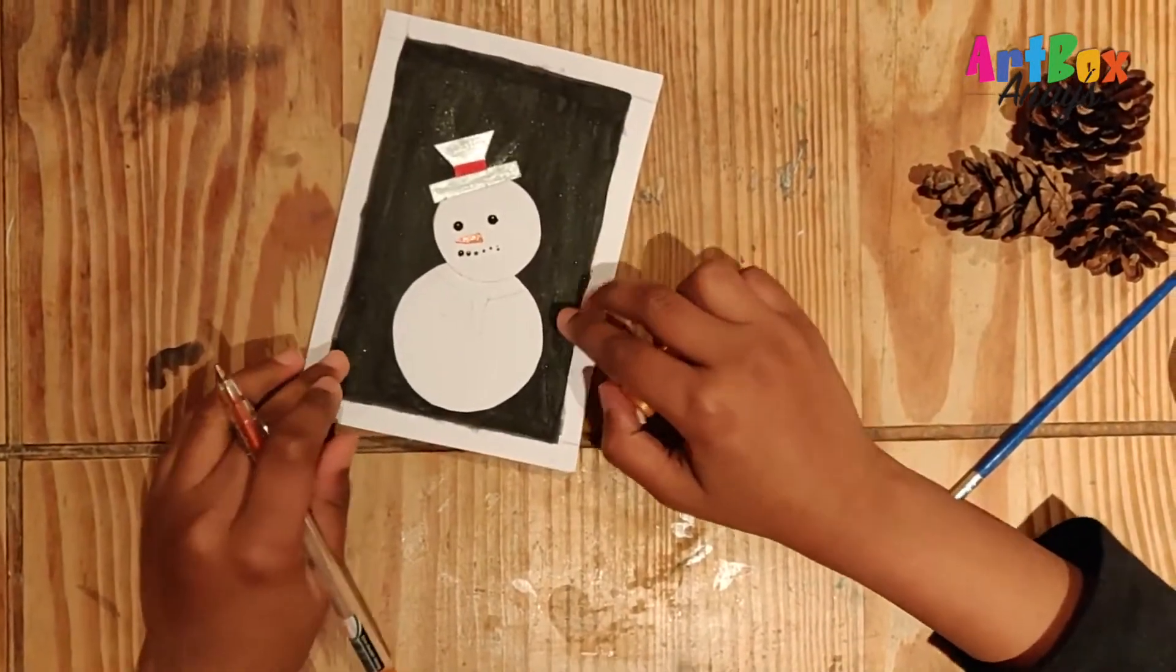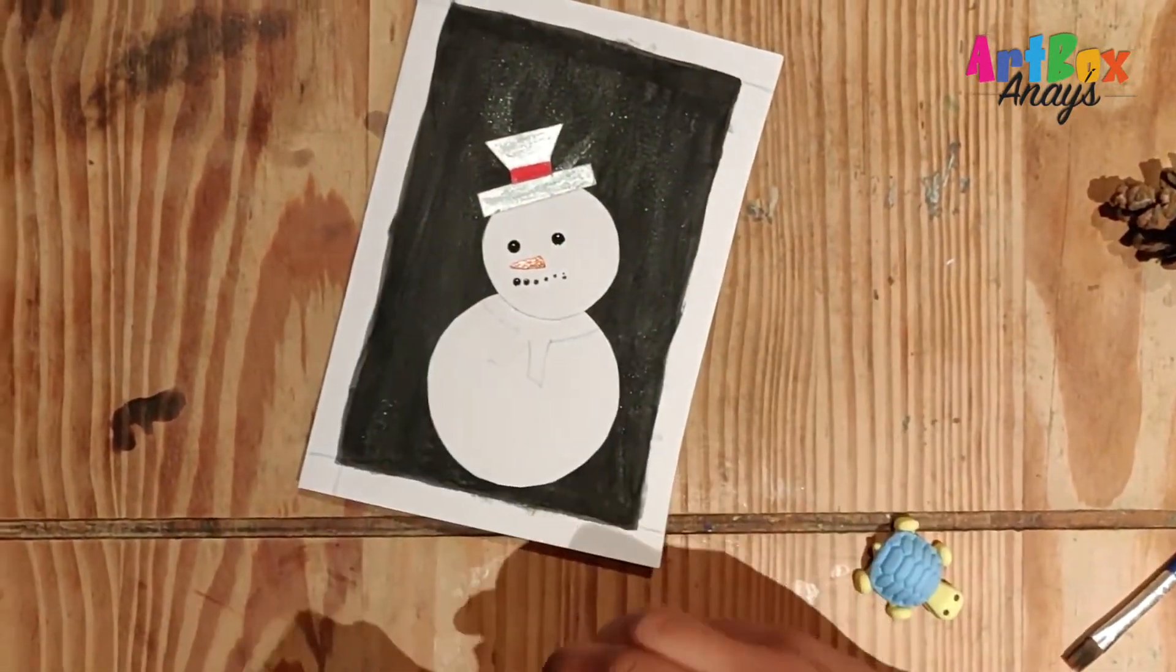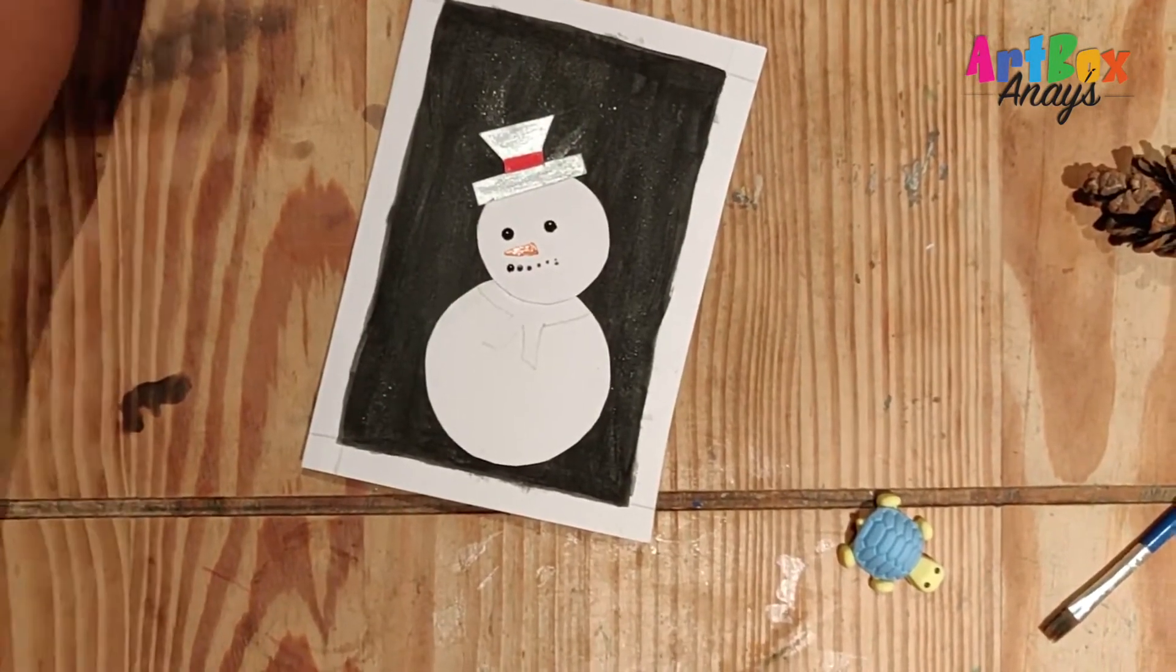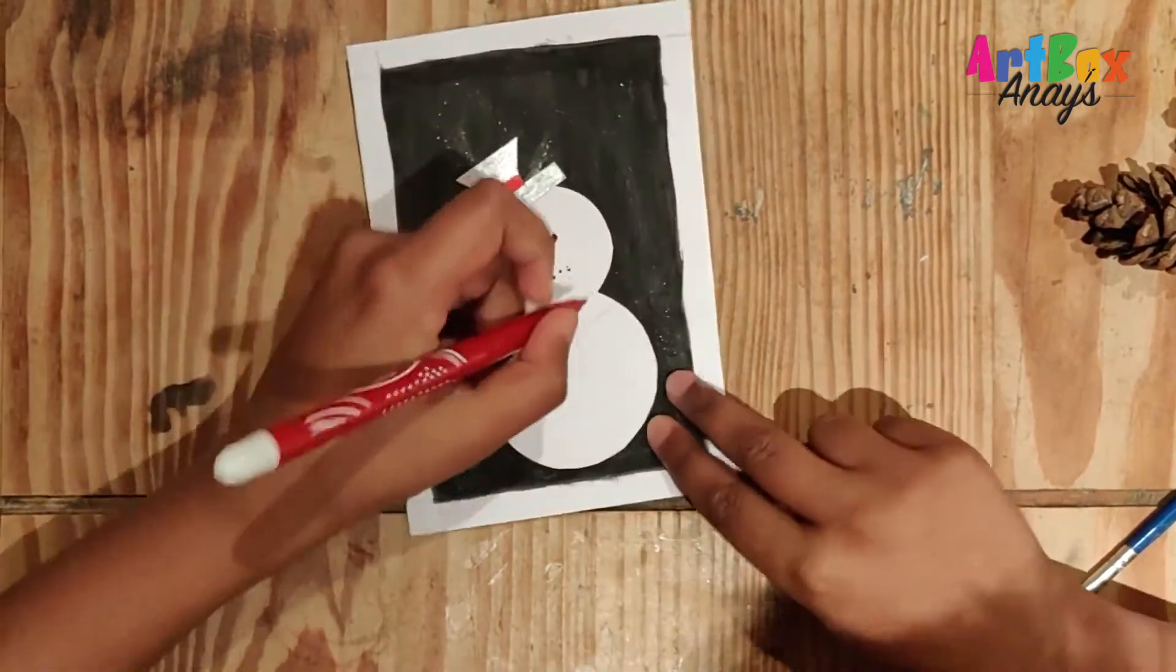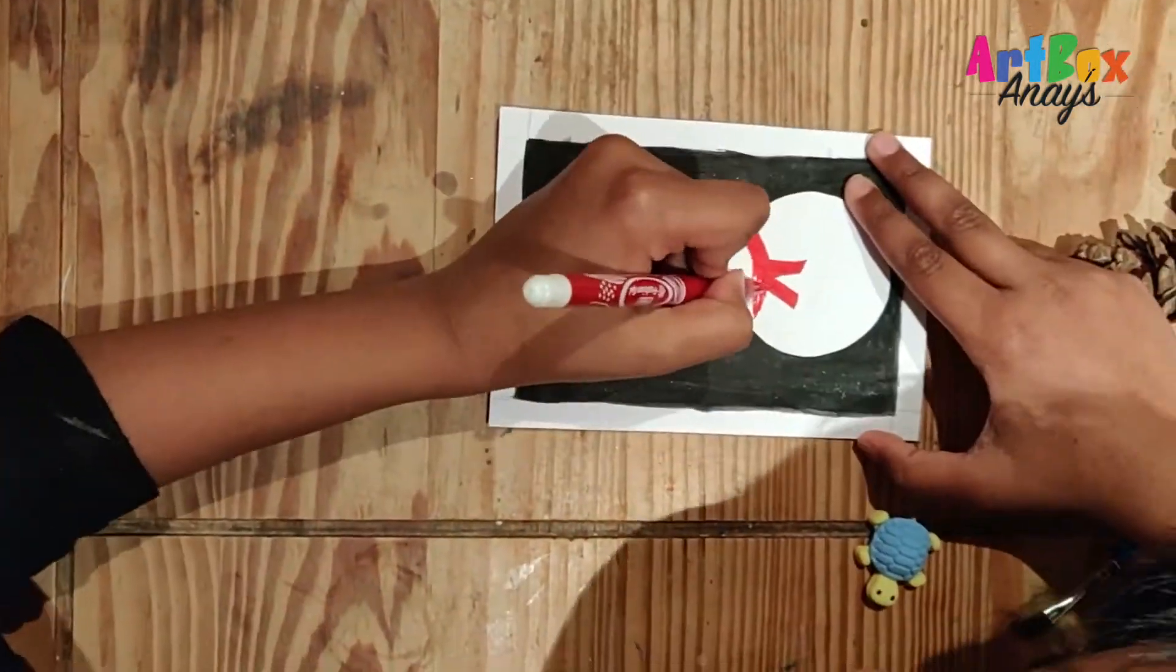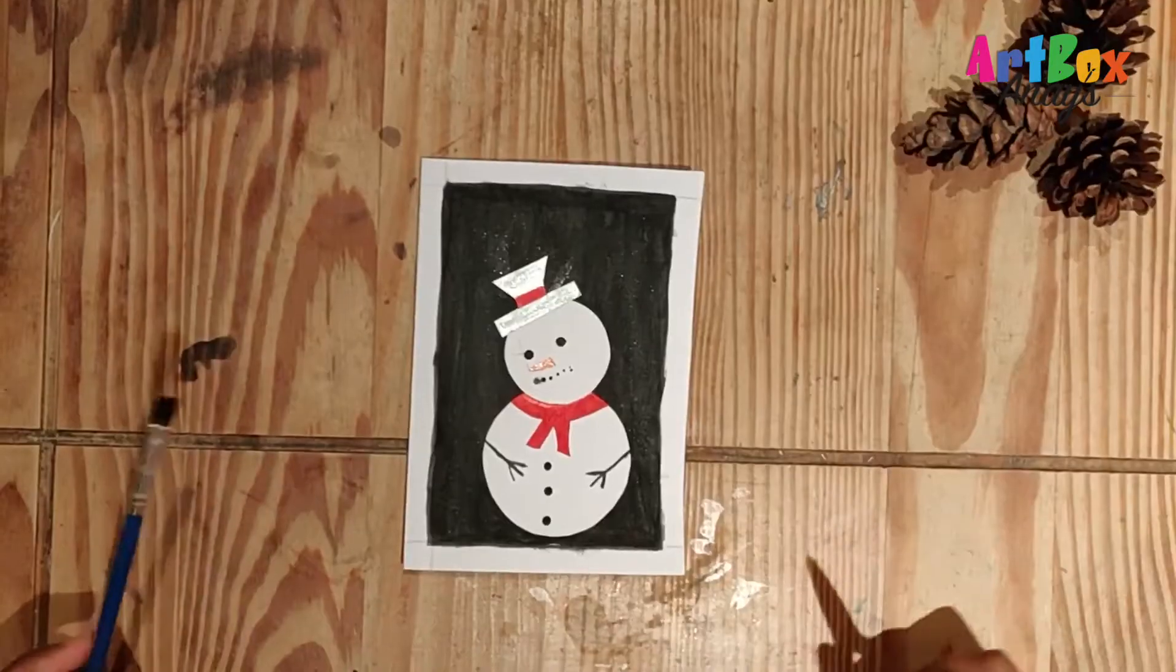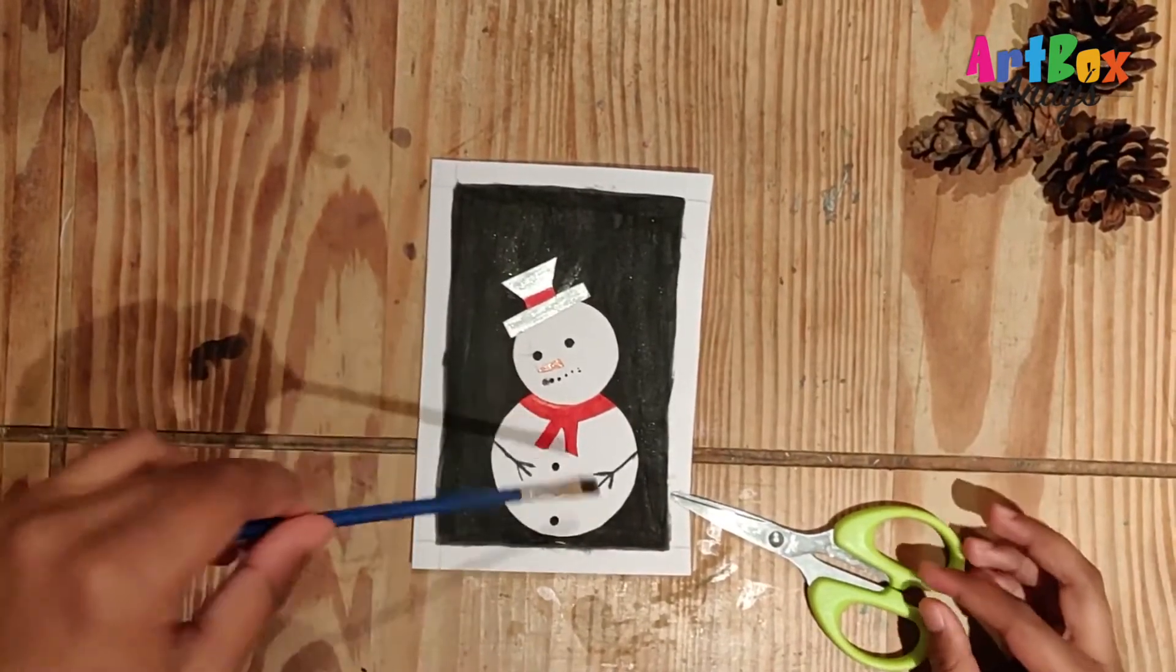And I have drawn a scarf over here and I'm going to color it. You can color it in whichever color you want. I'm just coloring it in red. Now we are going to give a snow effect to this snowman.